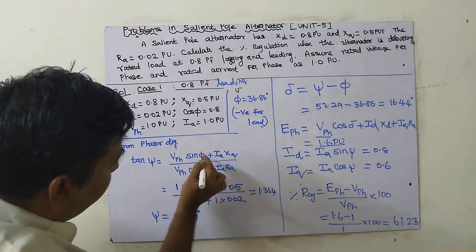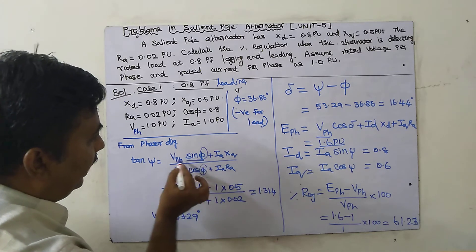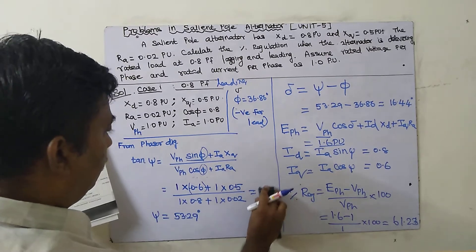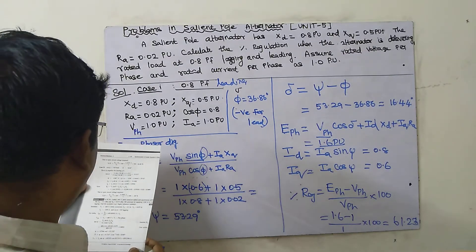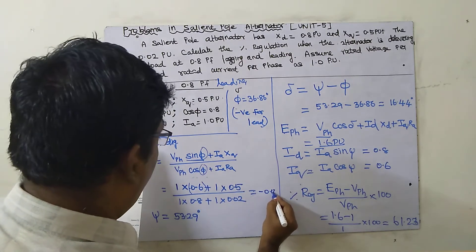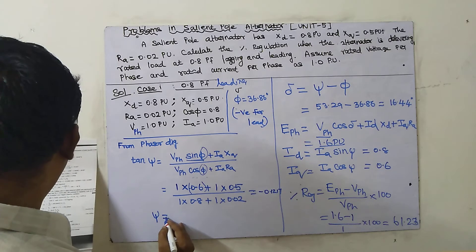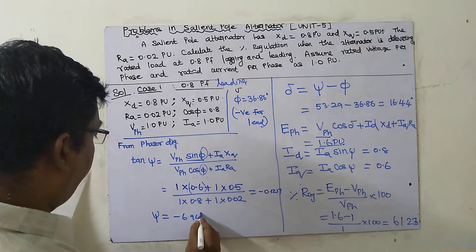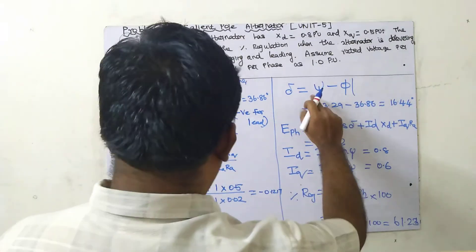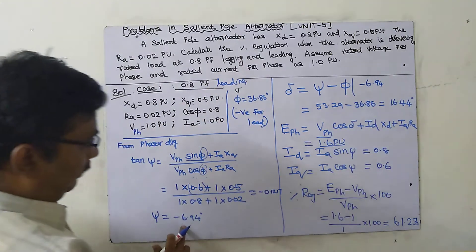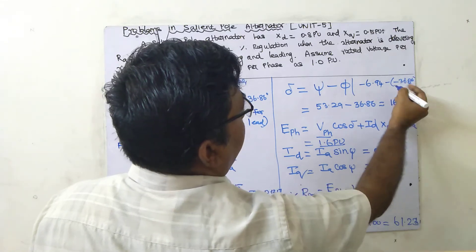For leading power factor, the tan ψ calculation gives a value of −0.1217, so ψ = tan⁻¹(−0.1217) = −6.94°. Then δ = ψ − φ = −6.94° − (−36.86°) = 29.92°. The negative ψ becomes positive delta because of the double negative.